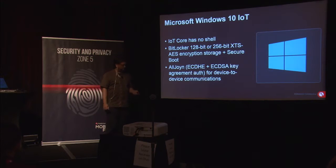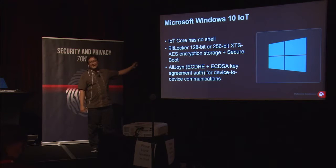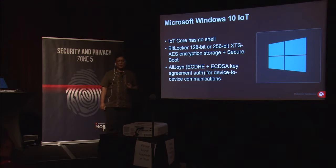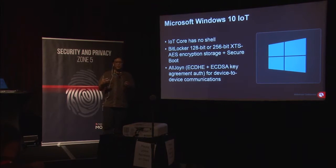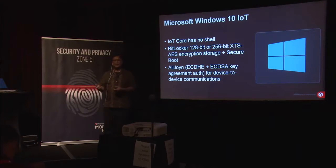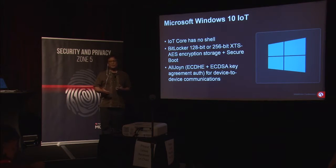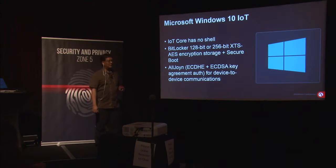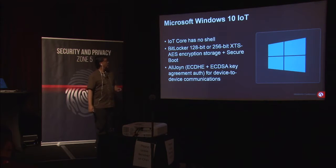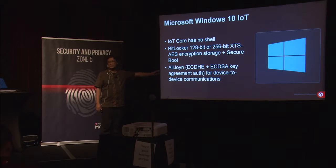Some of the security for Windows 10 IoT: the unique thing about IoT Core is it has no GUI — it's command line and PowerShell. It does have a web interface but it's very rudimentary, not the Windows 10 desktop GUI. IoT Core under the covers is actually Windows 10 Mobile. That was the first difficulty: where in the command line do you configure this? You can enable BitLocker encryption — 128-bit is the default, and you can also turn on 256-bit with XTS-AES. Their device-to-device protocol is called AllJoyn, which also uses elliptic curve cryptography.